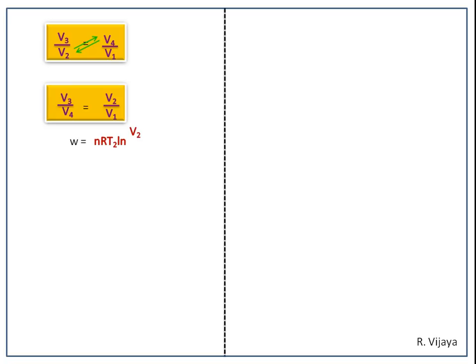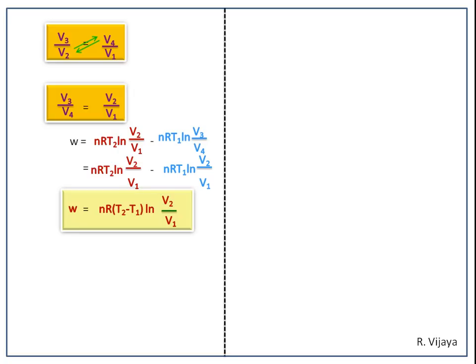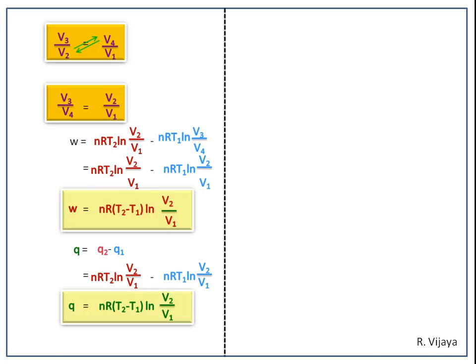Using the net work equation and substituting V2/V1 in place of V3/V4, and simplifying, we get the net work done: W = NR(T2 − T1) ln(V2/V1). Similarly, the net heat absorbed by the system is Q = Q2 − Q1. Substituting the known Q2 and Q1 values and introducing V2/V1 in place of V3/V4, simplifying gives: Q = NR(T2 − T1) ln(V2/V1).